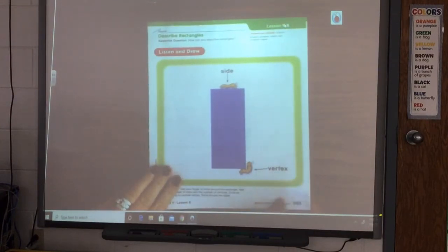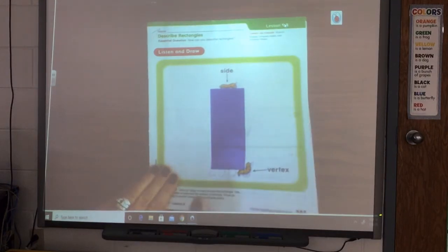This is different from a square because the rectangle has two short sides and two long sides. And we know that a square, all four sides are the same.